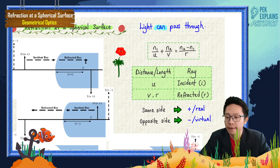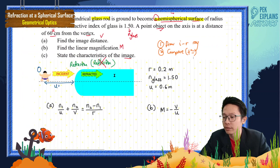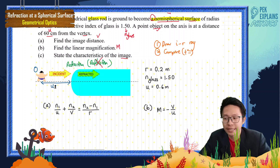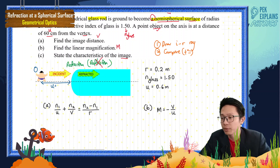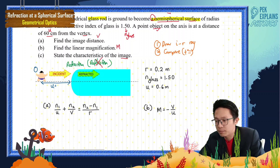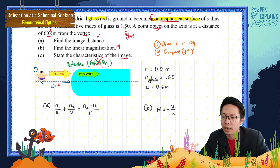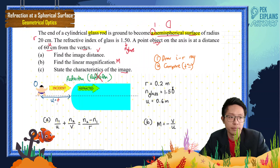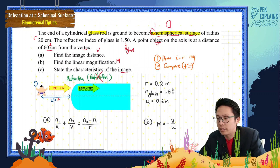Looking at the question: the object distance should be positive or negative? This object is on the same side as the incident ray, so same side means positive. Therefore U equals positive 0.6 meters.